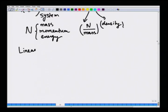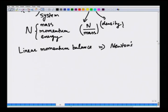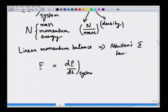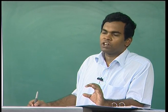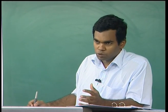The linear momentum balance is essentially a statement of Newton's second law of motion applied to the system. Newton's second law says that the rate of change of momentum in the system is equal to the sum of all external forces acting on the system. However, Newton's second law cannot be directly applied to a control volume because it is applicable only for an identifiable piece of matter, which is what the system is, whereas a control volume is not an identifiable piece of matter since fluid can come in and go out.